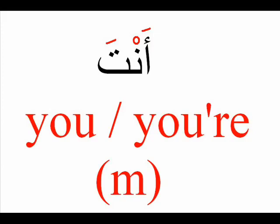Anta is used to say 'you' or 'you are' but in the masculine form. Because in Arabic there are two kinds of gender: female and male. So Anta is used to say 'you' or 'you are' but for the masculine. For example, Anta Dawood means 'you are David'.